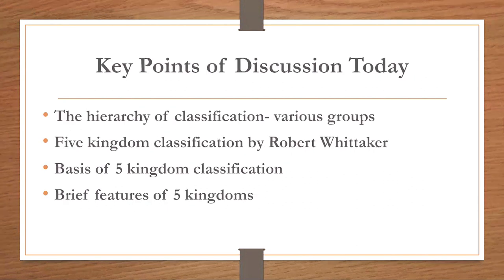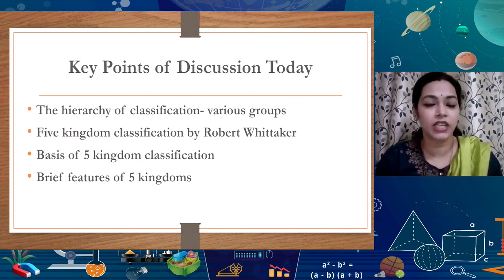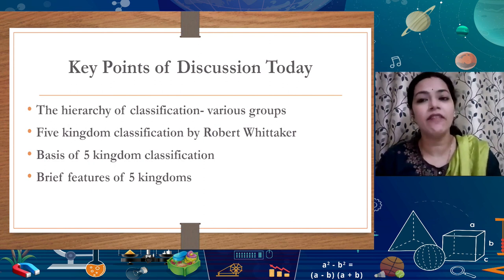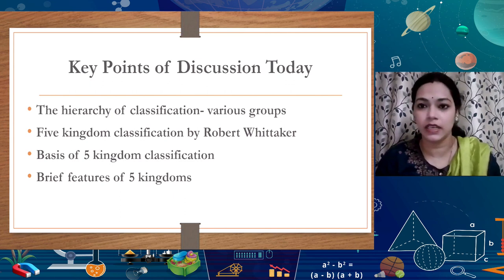Today we will be talking about the hierarchy of classification — dividing organisms into various groups and the criteria for doing so. I will also talk about the Five Kingdom Classification by Robert Whittaker, given in 1969, the basis of this classification, and the further division rules. I will also briefly introduce the features of all five kingdoms so learners become familiar with the diversity in our surroundings.